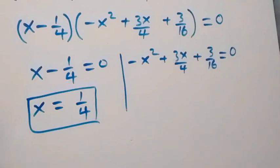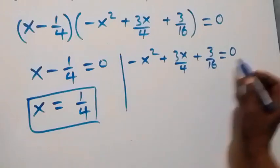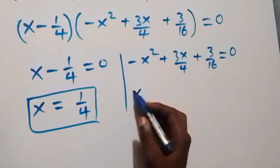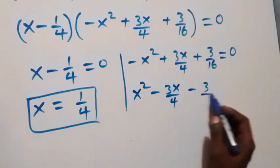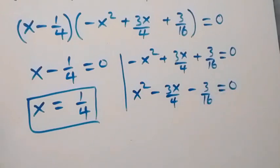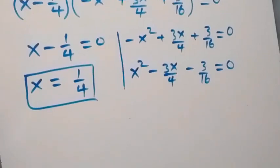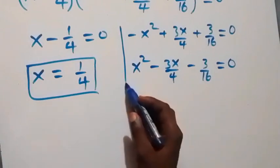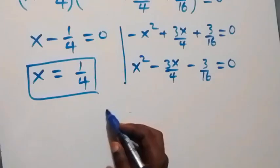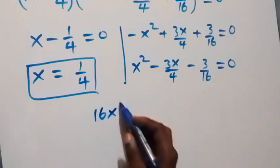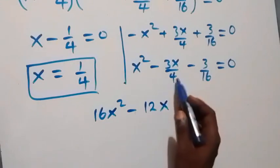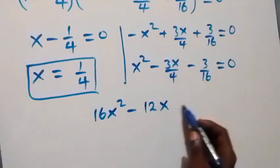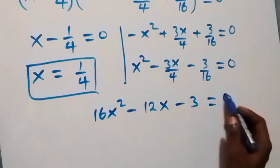For case two, we multiply through by minus one so the equation becomes x squared minus 3x over 4 minus 3 over 16 equals zero. Then multiplying through by 16 to clear fractions gives 16x squared minus 12x minus 3 equals zero.